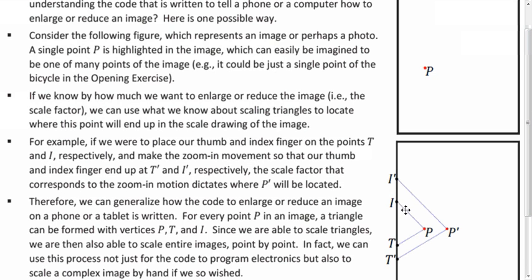So essentially, you start off with triangle ITP and you move your fingers and you want to make triangle I prime T prime P prime. And that's a very similar process to what we just did in the previous construction. So then the phone or tablet knows exactly where the pixel should be for P prime after you zoom in.